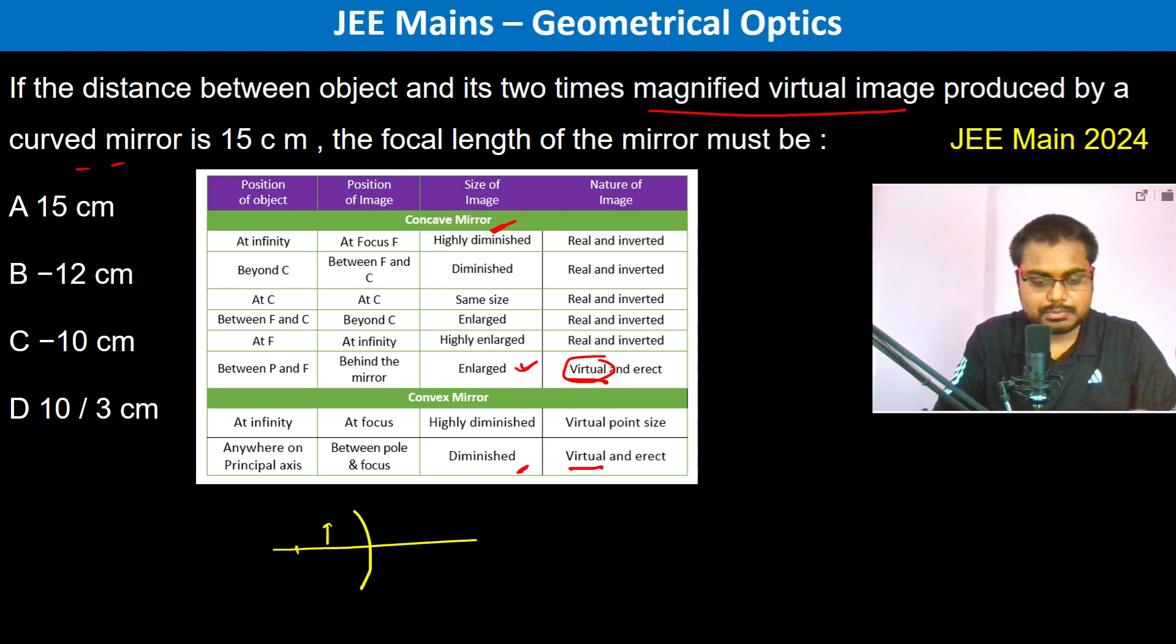It is placed between focus and pole and this is going to be the image. Now the distance between them is going to be 15 centimeter. So therefore we write magnification is equal to minus V by U is equal to height of image divided by height of object. So therefore V is equal to - height of image is actually two times height of object, so therefore V is equal to minus 2U.